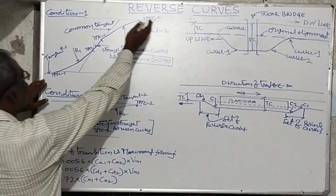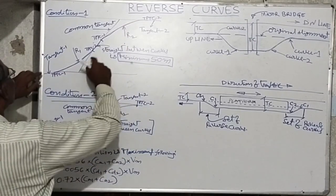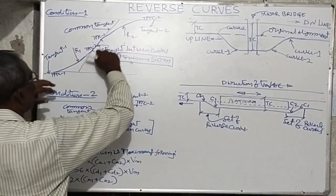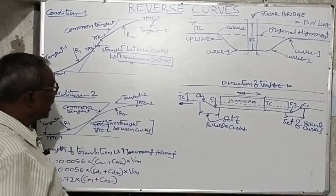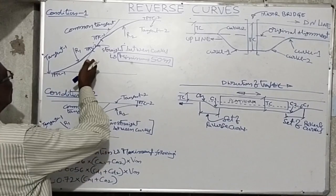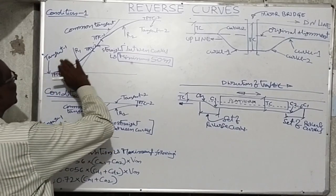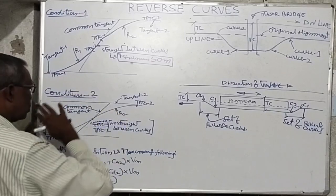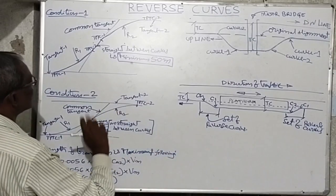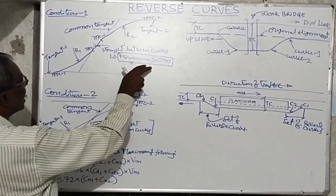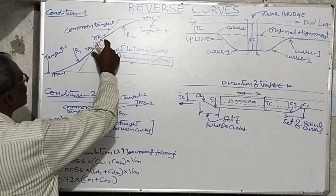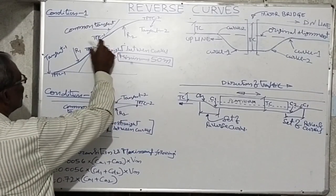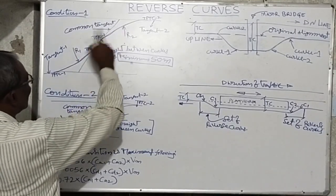For condition number one, where there is a straight track between two curves, the transition for each curve can be calculated independently — no problem at all. Since the straight track is more than 50 meters between both curves, they will act as independent curves.